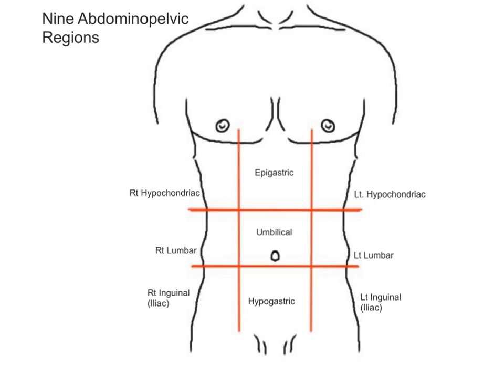The names of the nine regions and their contents are: The right hypochondriac region — meaning below the cartilage, a reference to the rib cartilage — which contains the gallbladder and parts of the right kidney and liver. The epigastric region, meaning above the belly, is located at the top of the middle column and contains the duodenum and parts of the liver, stomach, and pancreas.